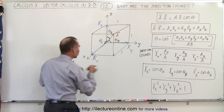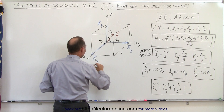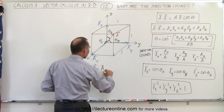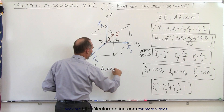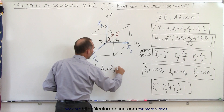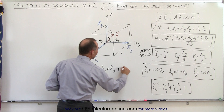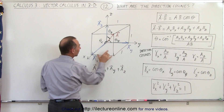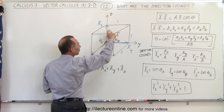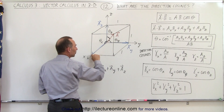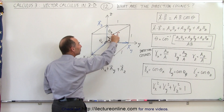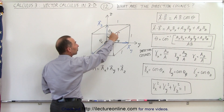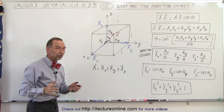By definition, vector a can be set equal to the sum of its three components: the x component plus the y component plus the z component. If you place the y component and the z component accordingly and add all three together, that gives you the vector from the origin to the point diagonally across.